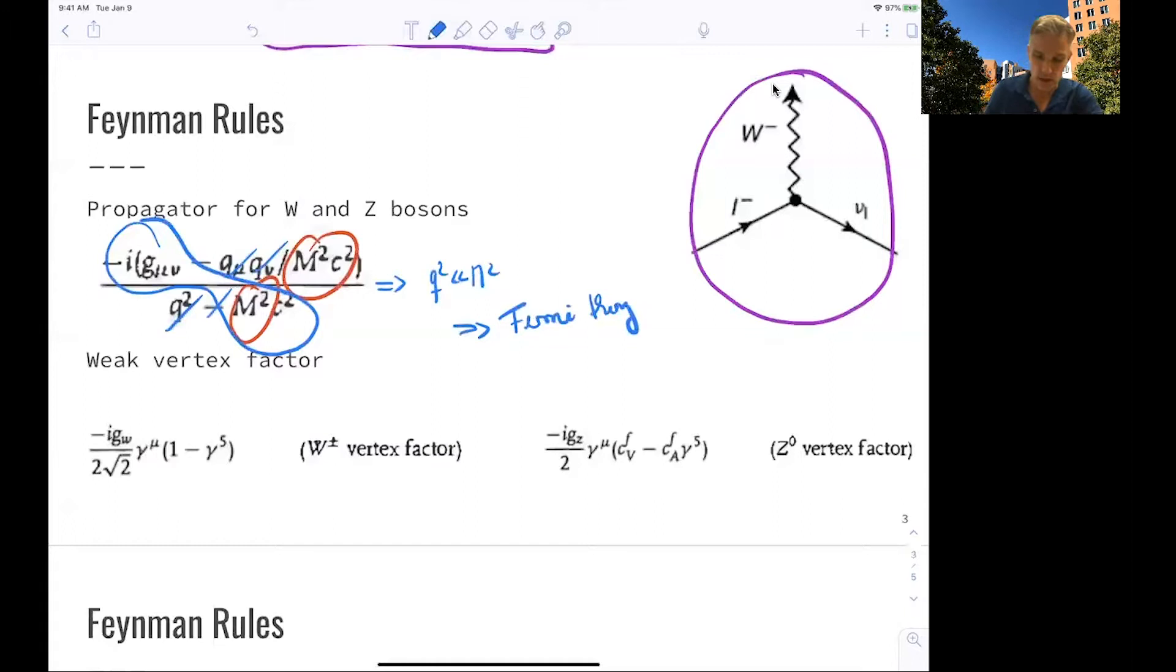We look at the Fermi theory a little bit more later. The vertex vector itself, describing the vertex here, is given here for the W boson and also for the Z boson, and it looks a little bit more complicated than the vertex vectors we have seen so far.